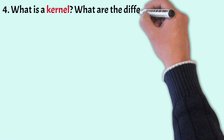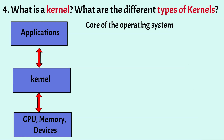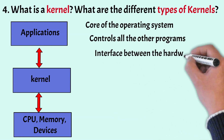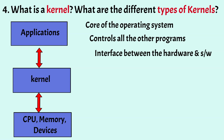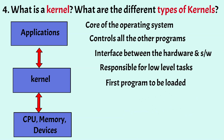What is a kernel and what are the different types of kernels? A kernel is a program that is the core of an operating system — the most important part that controls all other programs. It facilitates interaction between hardware and software components and manages operations of memory and CPU time. It is also responsible for low-level tasks such as disk management, memory management, and process management. A kernel is one of the first programs loaded at startup and remains in memory until shutdown.